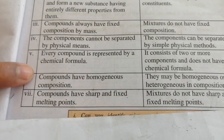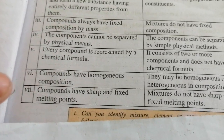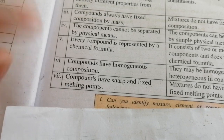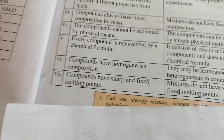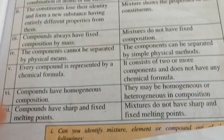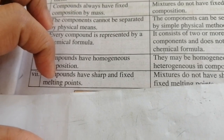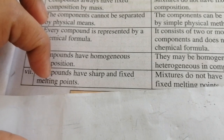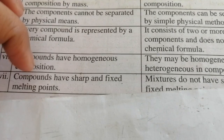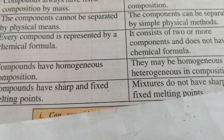Compounds always have a homogeneous composition. Mixtures can be either homogeneous or heterogeneous. A homogeneous mixture is one in which composition is uniform throughout — examples include wind, gasoline, and ice cream. A heterogeneous mixture is one in which the composition is not uniform throughout.